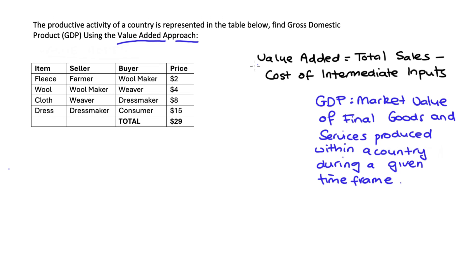I have some definitions here that are worth having a look at. The first is our definition of value added: value added is the difference between the total sales and the cost of any intermediate inputs. When we find GDP using the value added approach, we're going to add up the value added at each stage of production.